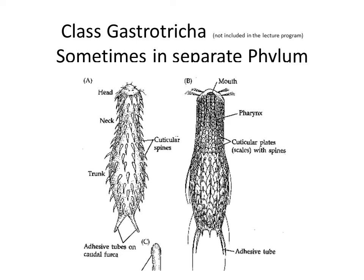The gastrotrichs are very small, microscopic but multicellular organisms whose body consists of a head, a narrowing part called a neck, and a trunk which is the body of the animal, and adhesive furca or lobes — structures at the back side of the body with which it attaches to the substrate. It has a pharynx, mouth, and cuticular plates which are protective on the surface of the body epithelium.